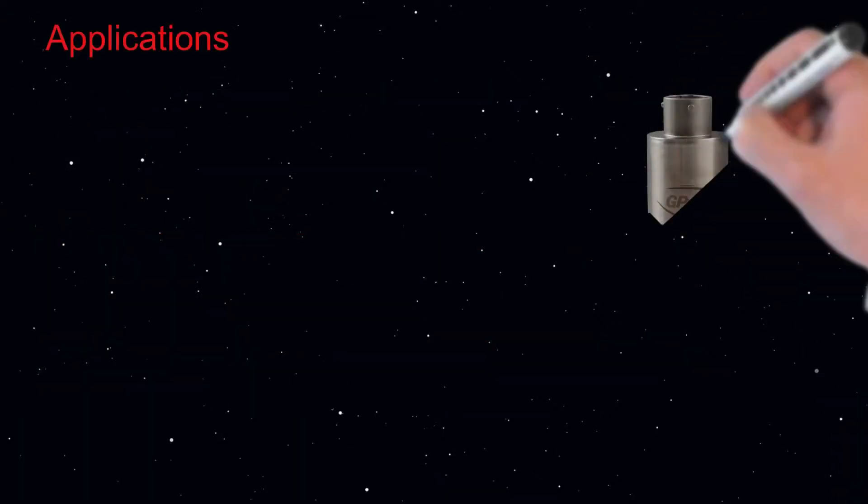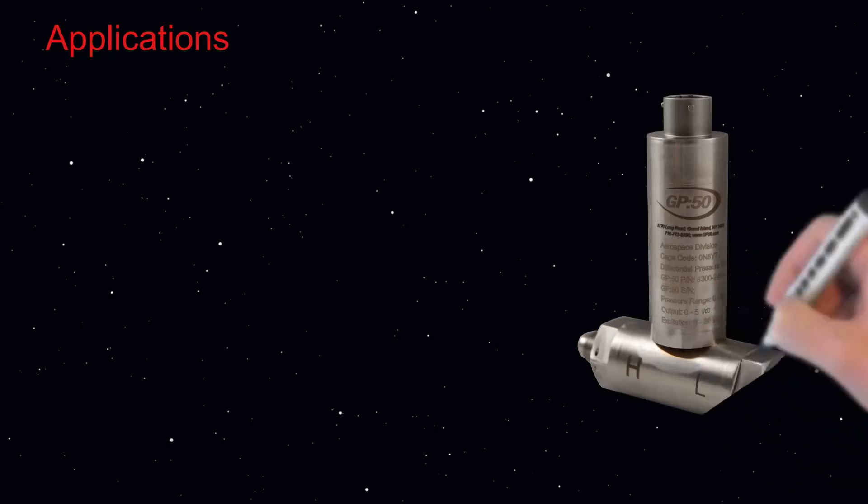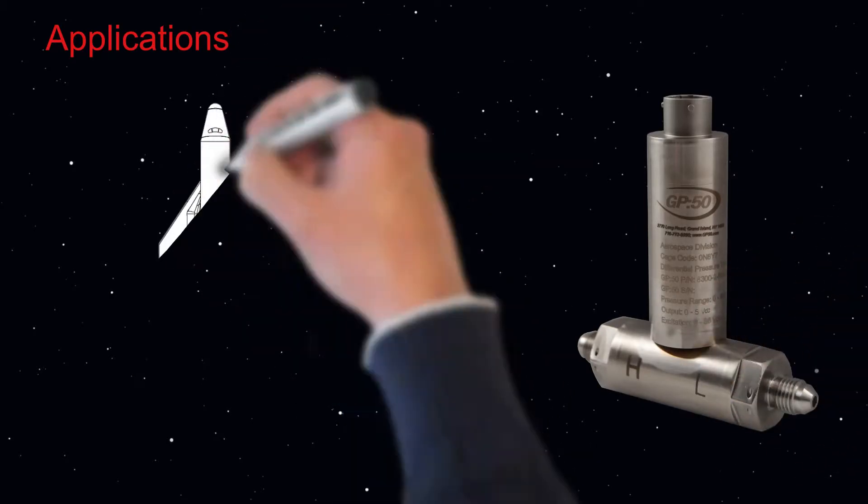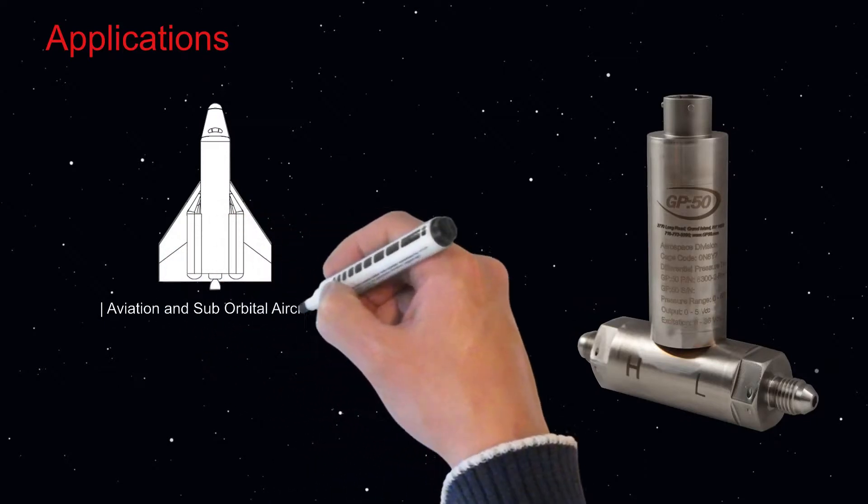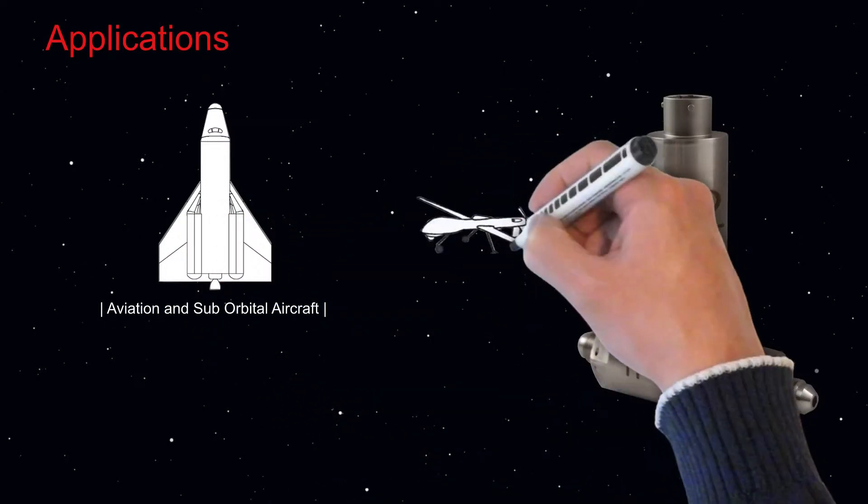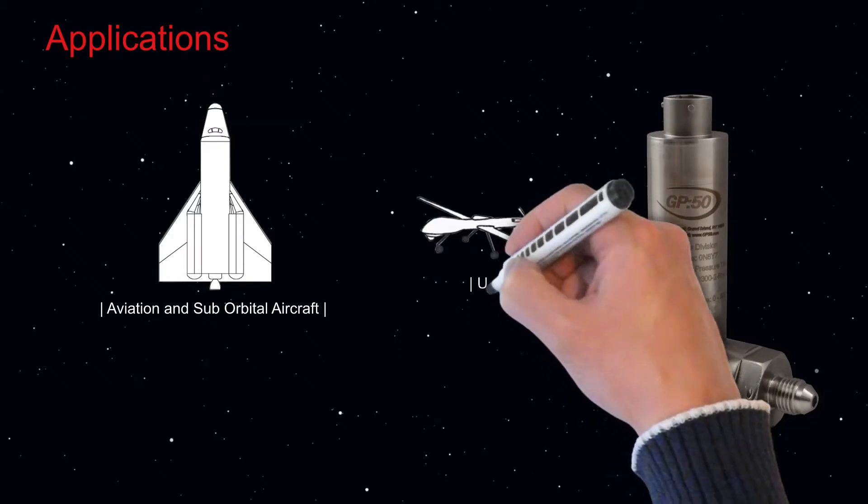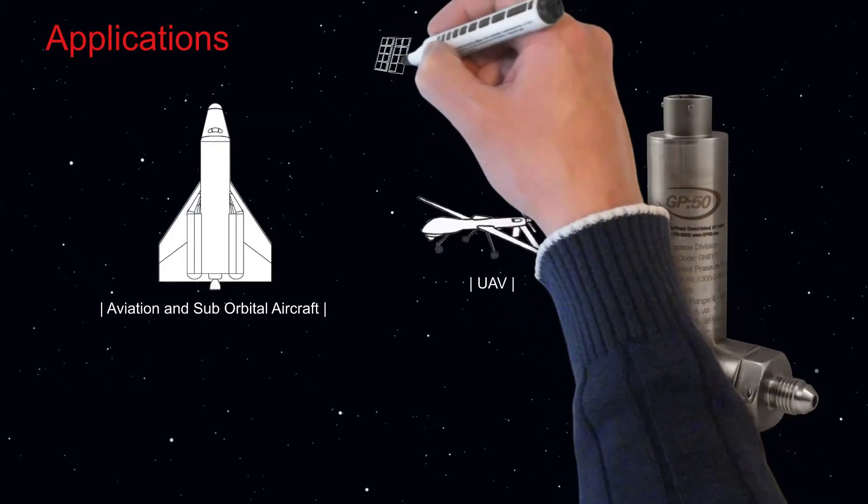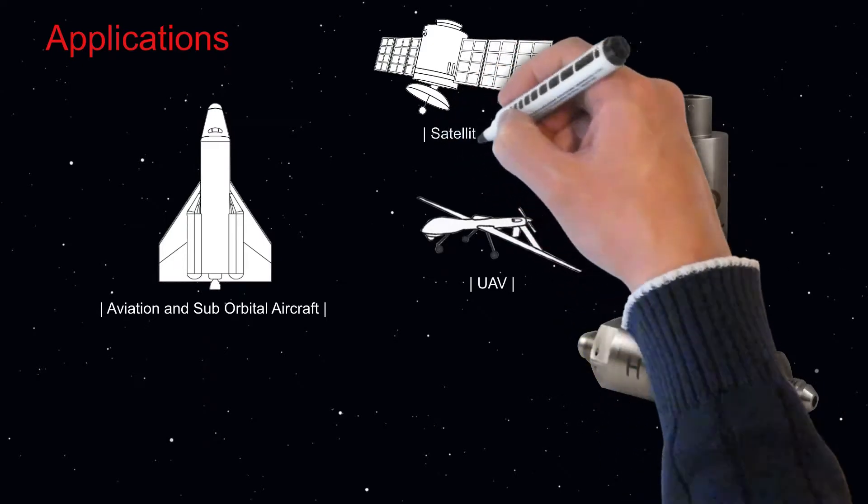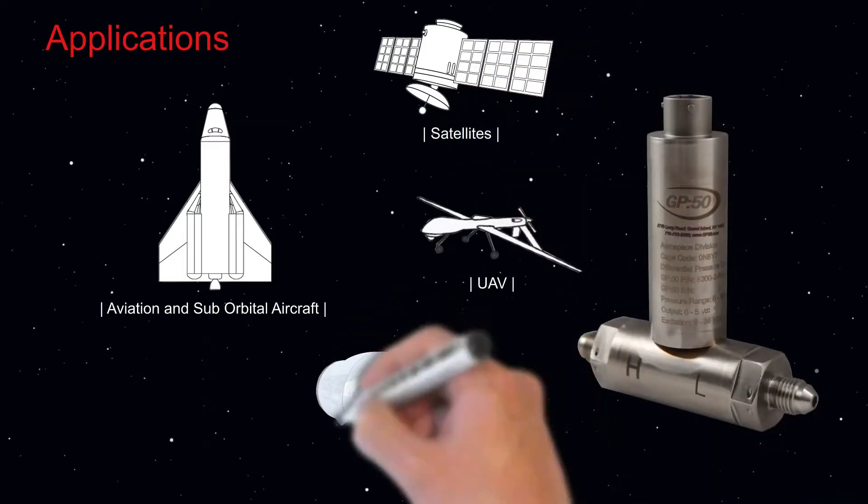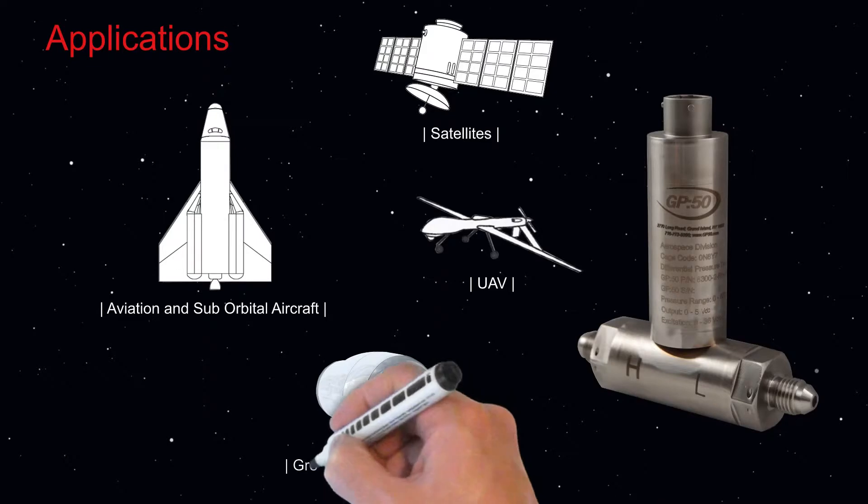The Model 7300 and 8300 differential pressure transducers have applications in a large array of vehicles and aircraft from aviation and suborbital aircraft, unmanned aerial vehicles, commercial and military satellites, launch vehicles, and ground and engine testing.